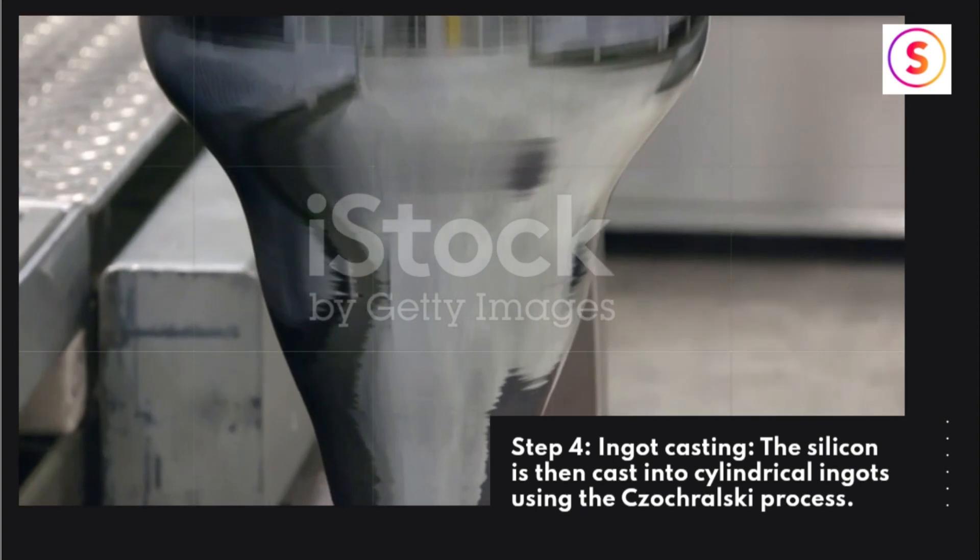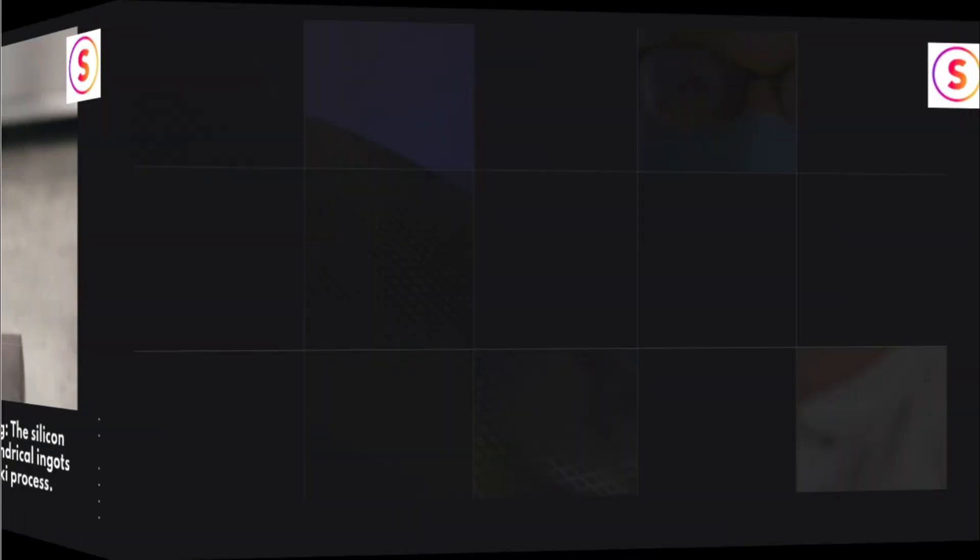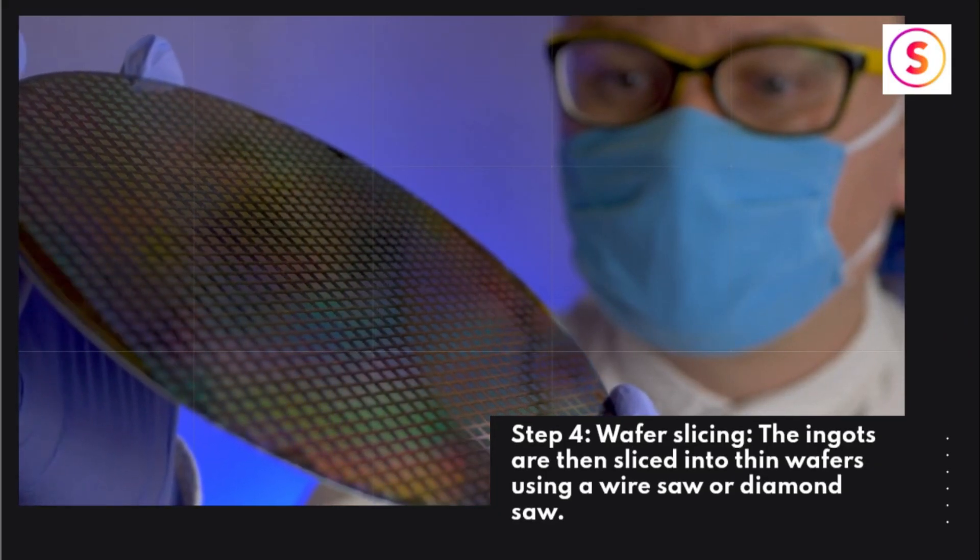Step 4: Ingot Casting. The silicon is then cast into cylindrical ingots using the Czochralski process. Step 4: Wafer Slicing. The ingots are then sliced into thin wafers using a wire saw or diamond saw.